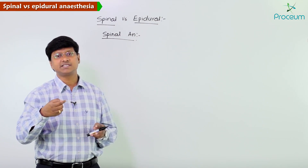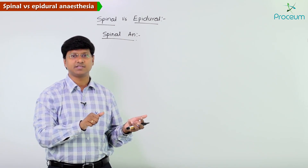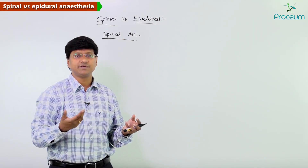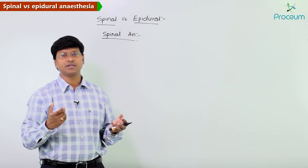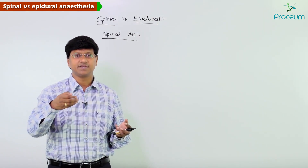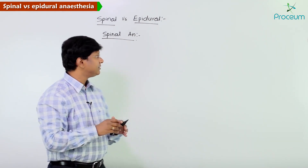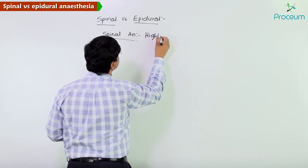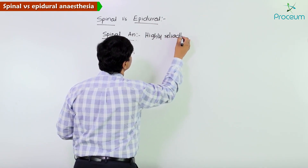Confirmation is by the presence of CSF in the needle and the loss of resistance. In epidural anesthesia, you do not have a similar confirmatory sign that the needle is in the epidural space. But in spinal anesthesia, we can confirm the needle is in the subarachnoid space by seeing CSF leaking through the needle and by loss of resistance. So spinal anesthesia is highly reliable.